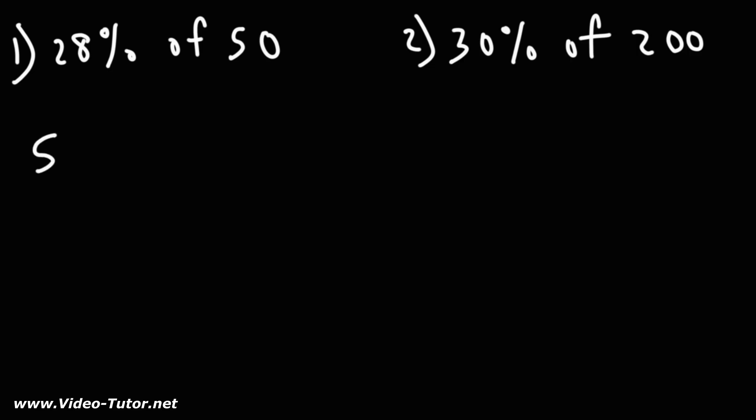To find the answer, you need to multiply. You need to multiply 50 by 28%. 28% as a decimal is 0.28. You simply need to move the decimal point two units to the left.